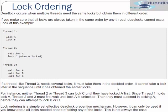Lock ordering is a simple yet effective deadlock prevention mechanism. However, it can only be used if you know about all the locks needed ahead of taking any lock. If you are sure which thread needs a lock on which object, it is very effective. But if you don't know which objects need to be locked by which thread, and the scenario is whichever thread finishes first can take a lock, then you cannot apply this technique.